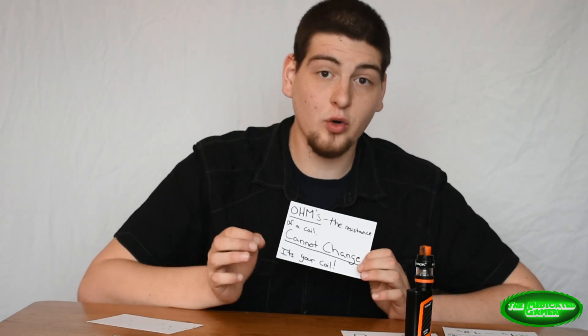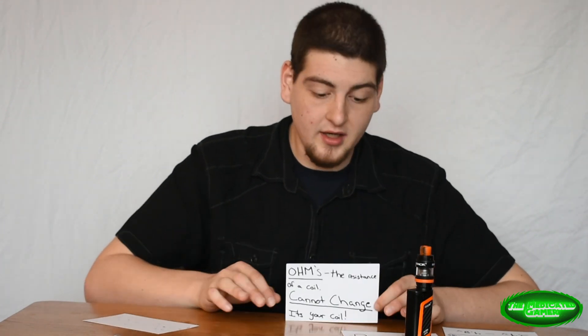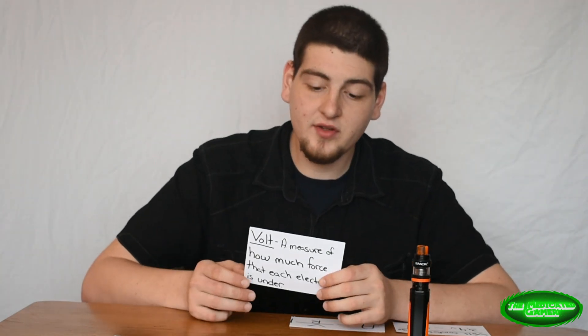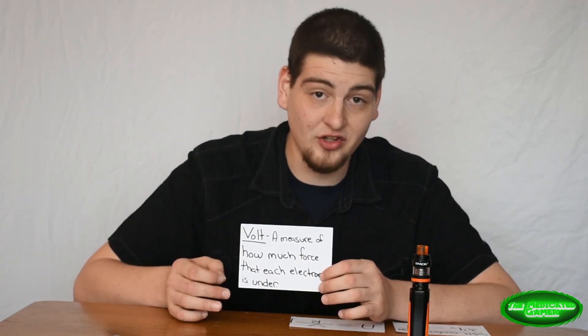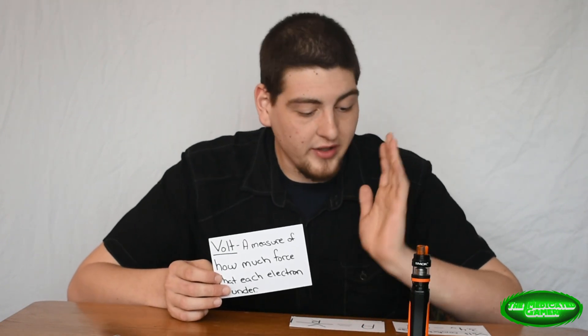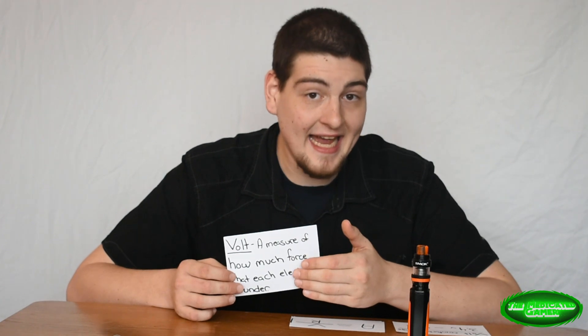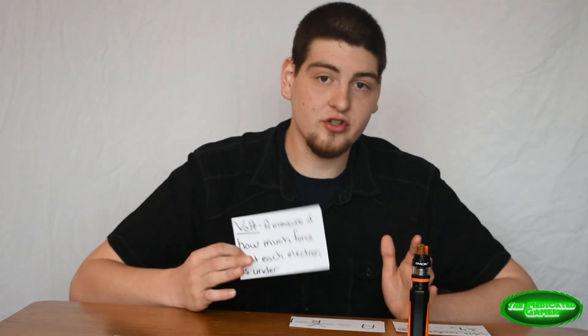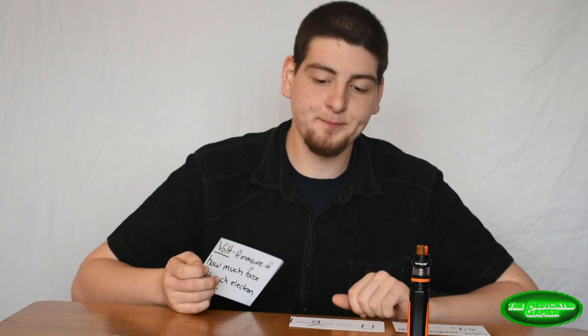Ohms is your constant. You cannot change this unless you make your coils yourself. When you buy your prefabricated coil that you put into your tank — not talking about RDAs — that is what it is. You can change your watts that goes into it, which changes the whole equation, but you cannot change your ohms. Your ohms is your constant. And lastly, we have volts. Volts is a measure of how much pressure each electron is under. It's a little more technical — you don't really need to worry about what it means exactly.